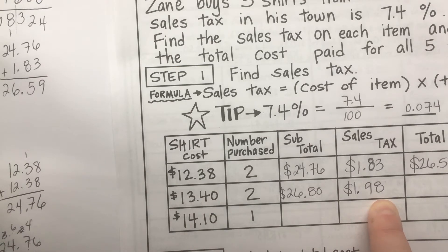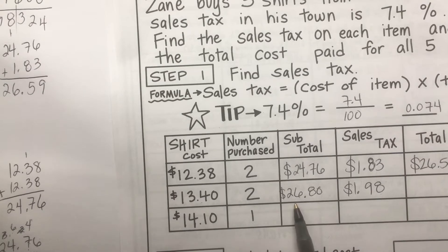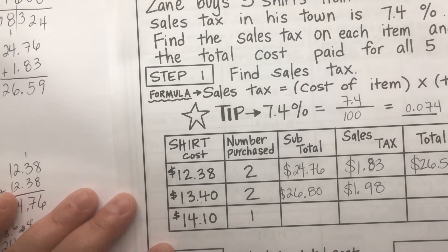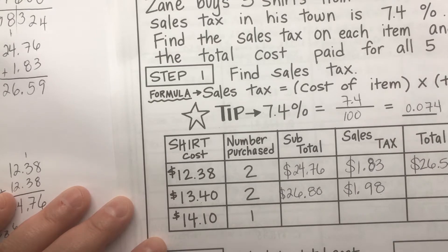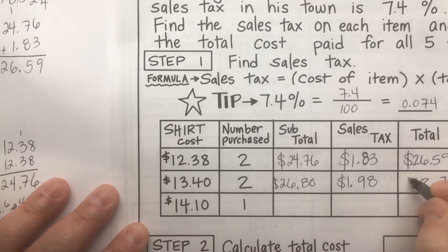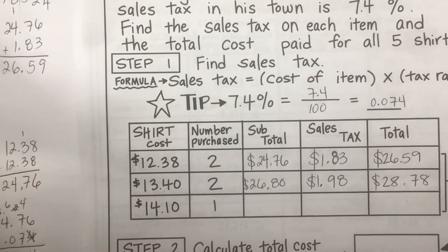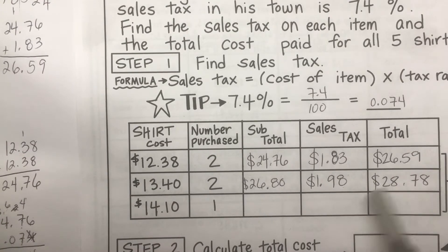Since our tax is two cents less than two dollars, here's a quick mental math trick: $26.80 plus two dollars is $28.80, and then take those two cents back away — that gives us $28.78. That's the total for those two shirts including tax.